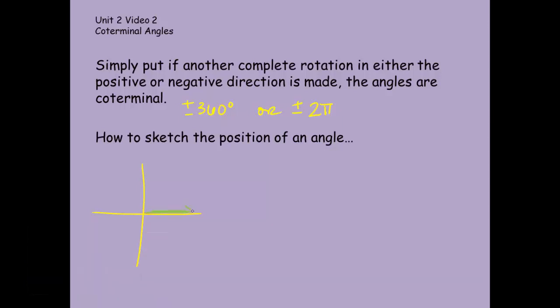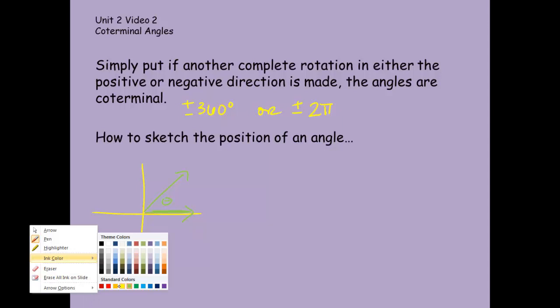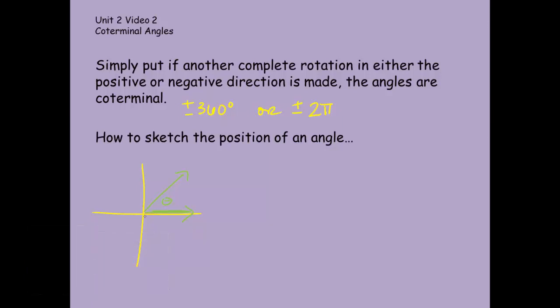I would say here is my original angle. And if I want to draw a coterminal angle to that angle, and I encourage you to get different colors when you're doing this in your notebook as well so you can see, this angle would start here, it would go around, it would end there. So I could say alpha and theta are coterminal angles.